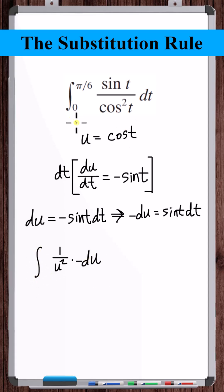We can also update the limits of integration. When t is equal to 0, u is equal to 1. When t is equal to pi over 6, u is equal to root 3 over 2. So we have the integral of 1 over u squared.